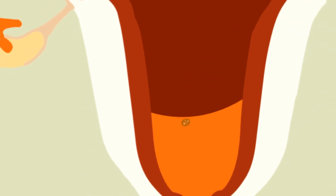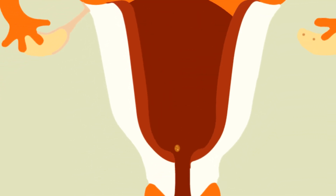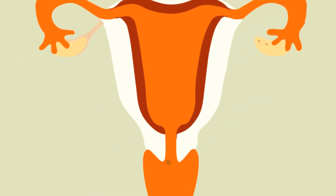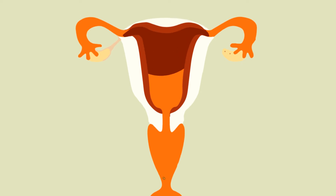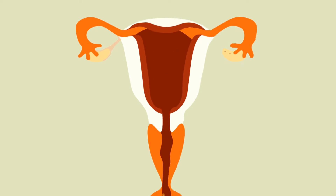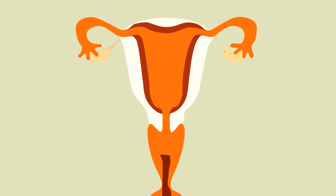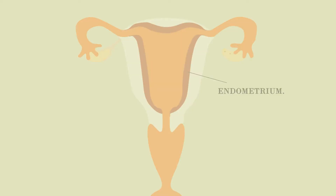While the egg cell matures, its follicle secretes a hormone that stimulates the uterus to develop a lining of blood vessels and soft tissue called the endometrium.